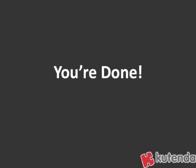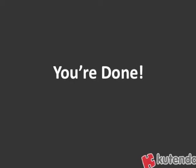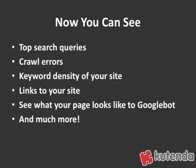Once you have Google Webmaster Tools set up, you can see things like top search queries, any crawl errors that Google is having when it's looking at your site, keyword density, and links to your website — both internal and external. You can also see what your pages actually look like to Googlebot to see if there are any problems. There's a ton more information in there, and we'll go back and look at some of it in future tips.